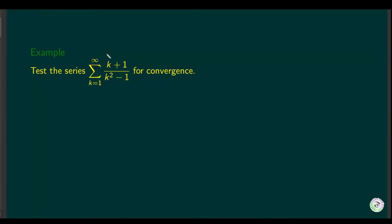Since 1/k is the harmonic series and we know that diverges, if we can use the comparison test to show this series is greater than 1/k, we can use the direct comparison test and conclude the series is divergent.